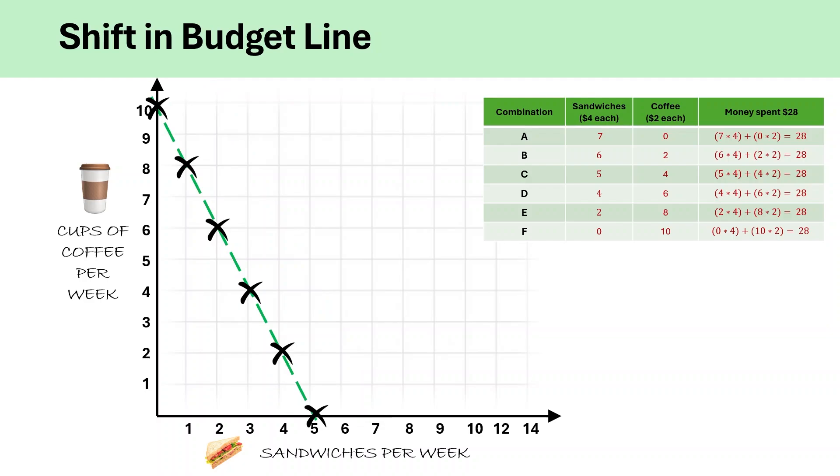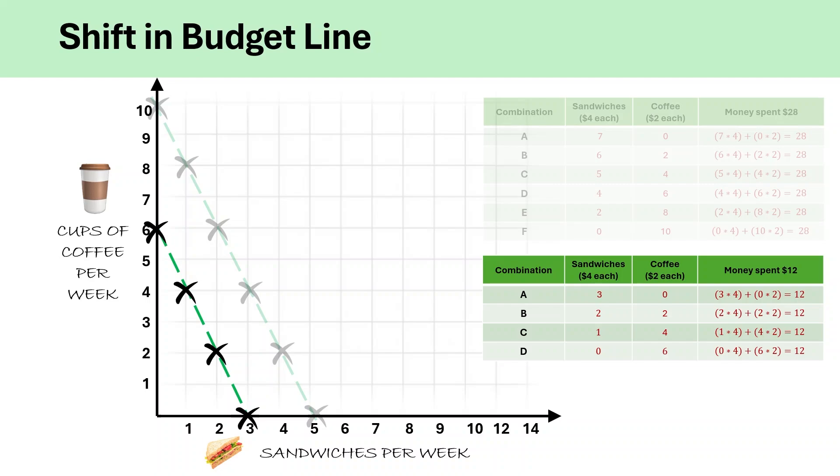Now, what will happen if his budget reduces from $20 to let's say $12? In that case, the budget line will shift to the left. So, what do we understand from this? That the shift in budget line is caused when the budget of the consumer changes.